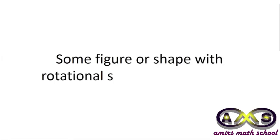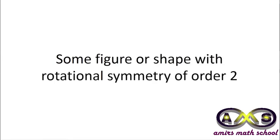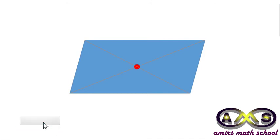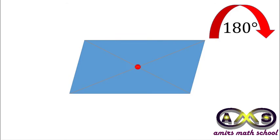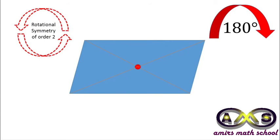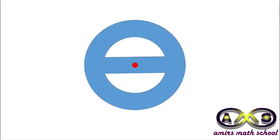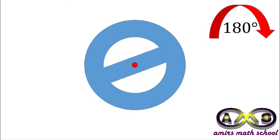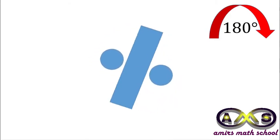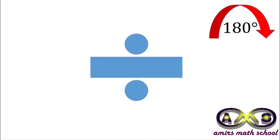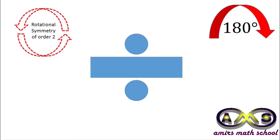Some figures or shapes with rotational symmetry of order 2. Consider a parallelogram with rotation with respect to the red point, where the red point is the intersecting point of the two diagonals. After 180 degree rotation, it became identical with the initial one. So, this parallelogram has rotational symmetry of order 2. This figure also has rotational symmetry of order 2. This one is the division symbol in mathematics, and it also has rotational symmetry of order 2.